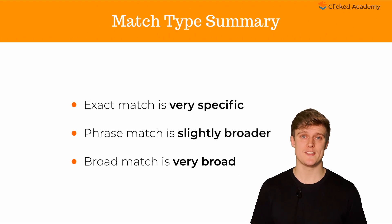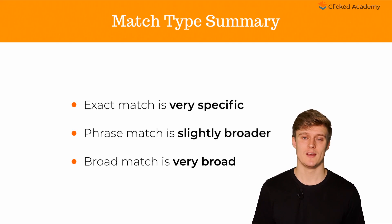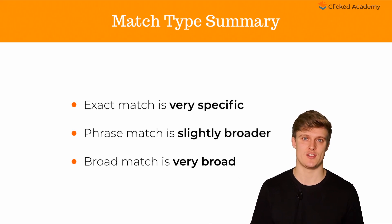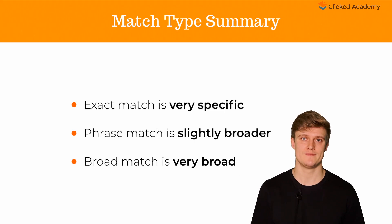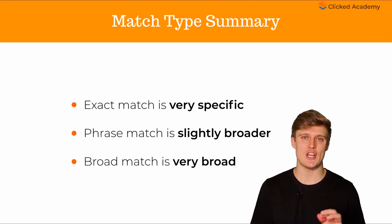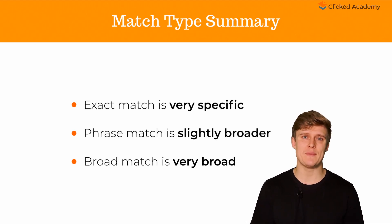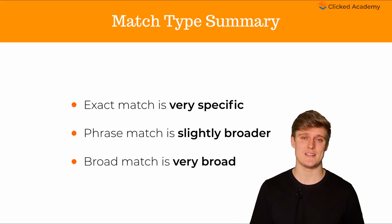The following is a short summary of the most important parts of the past few sections. Number one: to simplify keyword match types, you can remember it like this — exact match is very specific search terms, phrase match is slightly broader, and broad match is very, very broad. Number two: in each ad group, you should use both exact and phrase match keywords with the same keyword lists you're going to include. We'll show you how to do this in the next section.